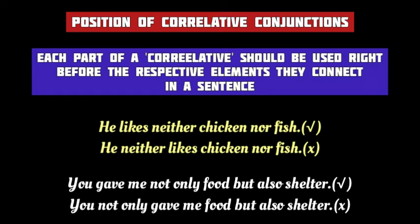Coming up next is the position of Correlative Conjunctions. A Correlative consists of two words or expressions always used in a pair. The rule of grammar says that each of these paired words should be placed right before the word, phrase, or clause they connect in a sentence. For example, in 'He likes neither chicken nor fish,' 'neither' is placed immediately before 'chicken' and 'nor' is placed right before 'fish.'